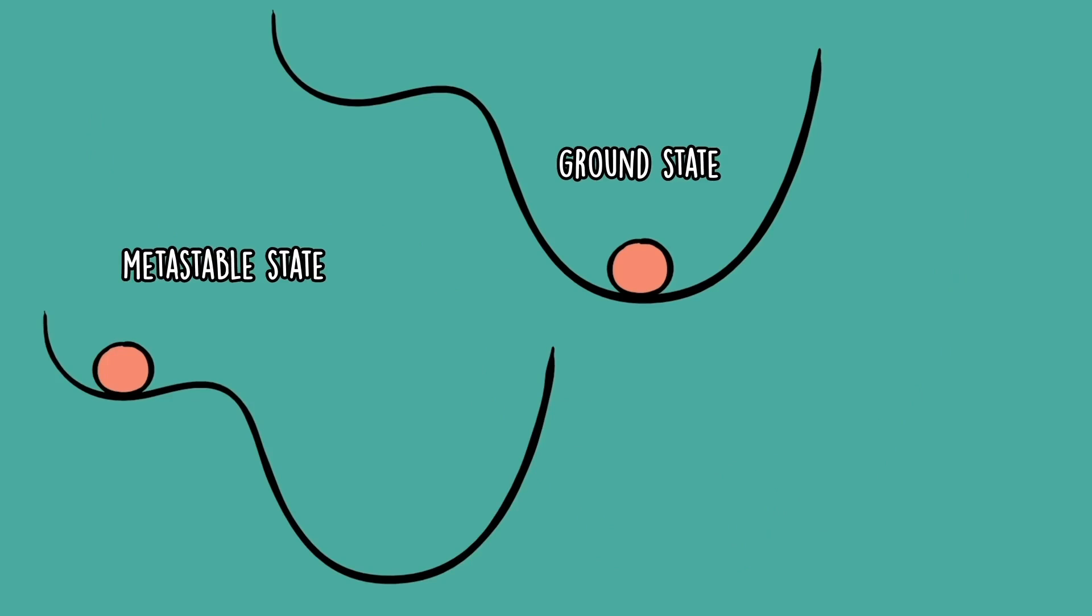An unstable state would be something like this tiny cliff sticking out. The ball sure isn't going to last very long there and will probably fall down just from gravity. So the ball stays longest in the ground state, shorter in the metastable state, and even shorter in the unstable state.